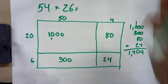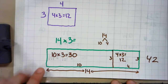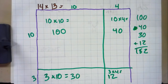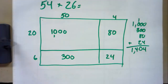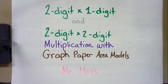You can see how starting with an area model like 4 times 3 can lead us to 14 times 3, which leads to 14 times 13. Once we understand the concept, we can just draw our own area model without counting boxes to work with larger numbers. This has been Mr. Moss working with you on two-digit and one-digit multiplication with both graph paper area models and drawing it out on plain paper. Hope this is a helpful guide. Have a great day, bye-bye.